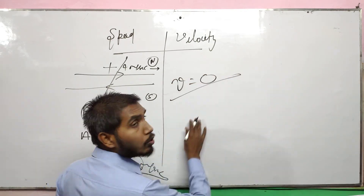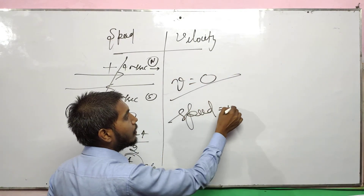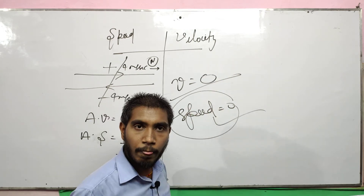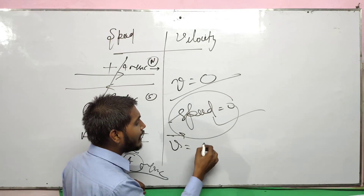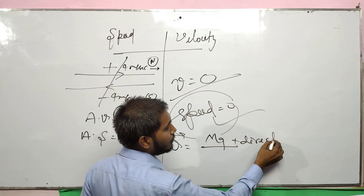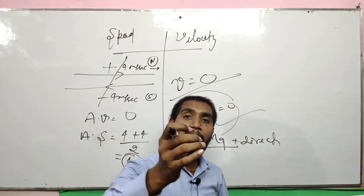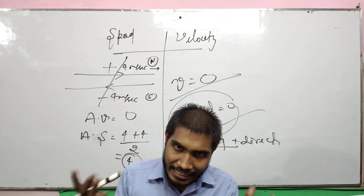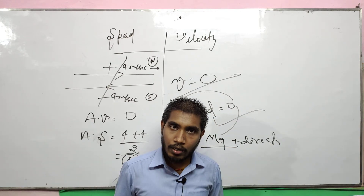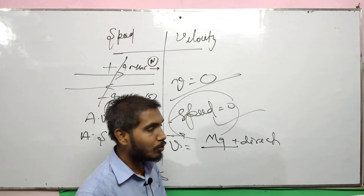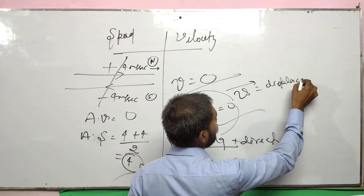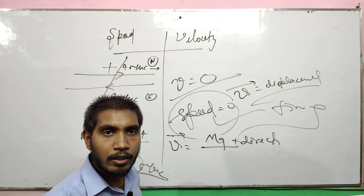But velocity must be zero if speed is zero, because velocity is made of magnitude and direction. If speed is zero, it means you have not covered any distance, which means you are not traveling. If you are not traveling, there is no displacement. And if there is no displacement, there is no velocity, since velocity is displacement upon time.